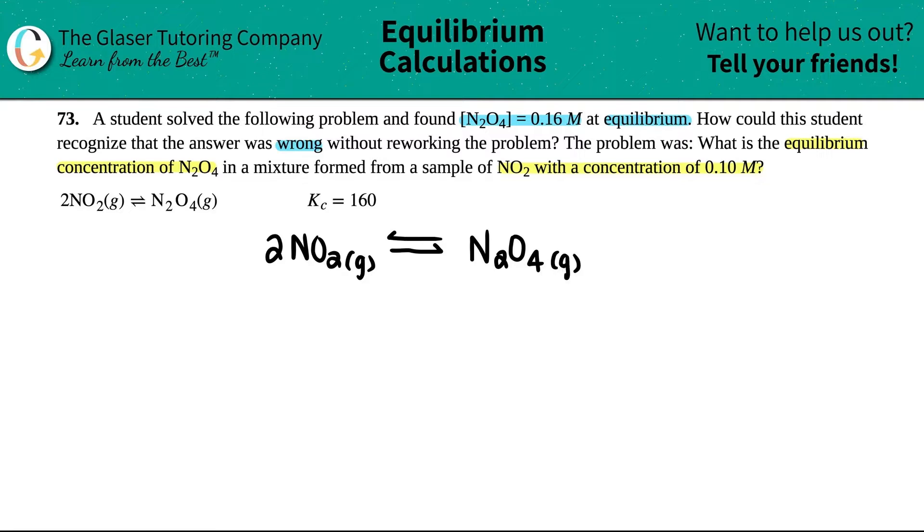The question was they wanted to solve for the equilibrium concentration of N2O4, and the known was that there was a concentration of NO2 which was 0.10 molarity. So I know that I have this information, it's 0.10 molarity.